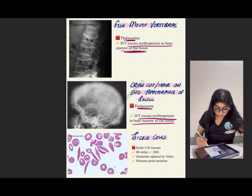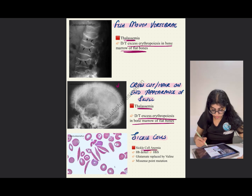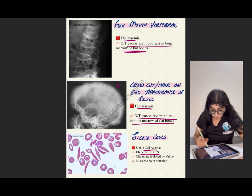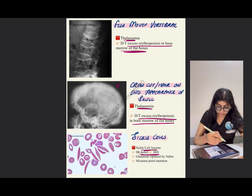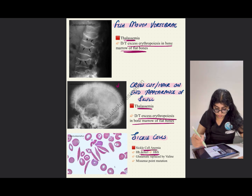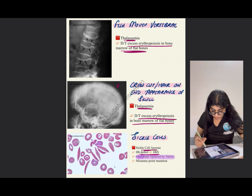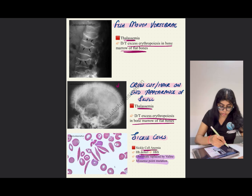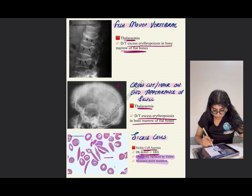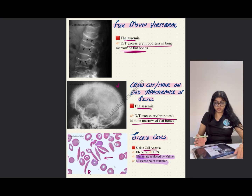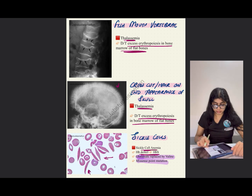Sickle cells are seen in sickle cell anemia, in which there is a hemoglobin defect — HbS. In sickle cell anemia, glutamate is replaced by valine; it is a missense point mutation — you have to remember that. The cells will literally look like a sickle and directly point to sickle cell anemia.